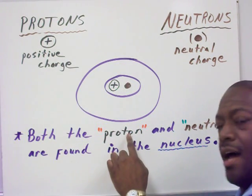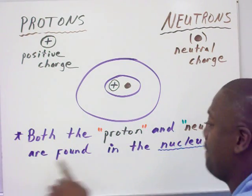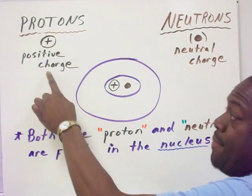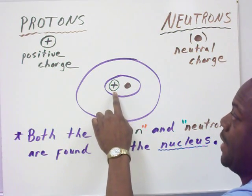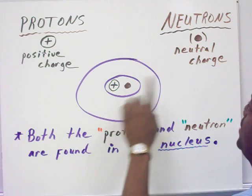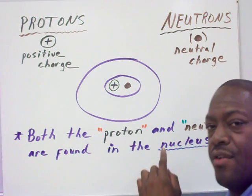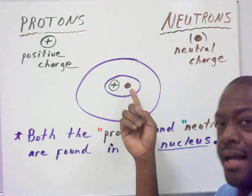Both the proton and neutron are found in the nucleus. Protons have a positive charge, which is notated by a plus sign here in the center of this illustration. Then we have our neutrons that have a neutral charge, which are denoted by a dot.